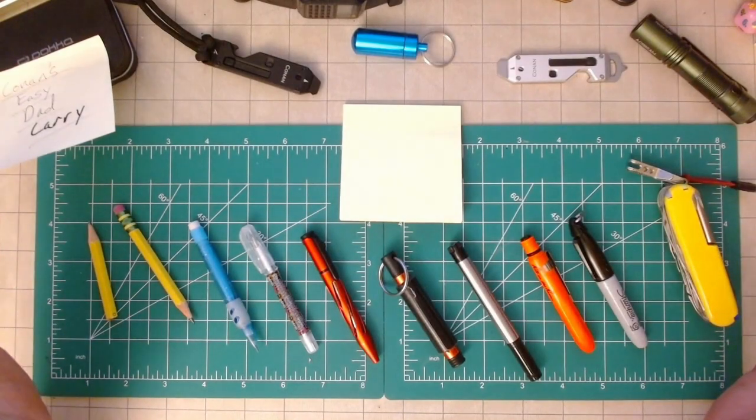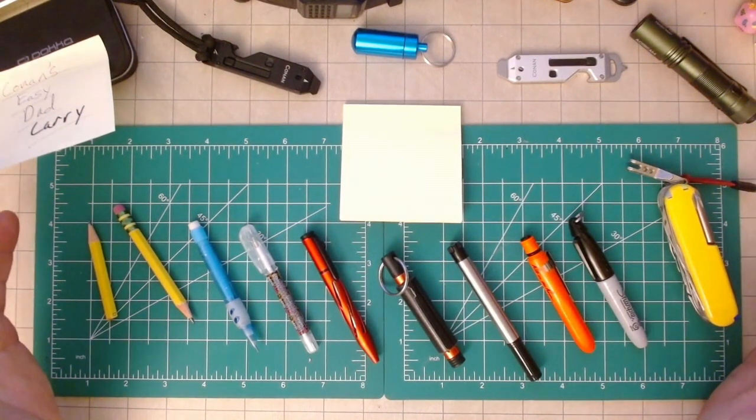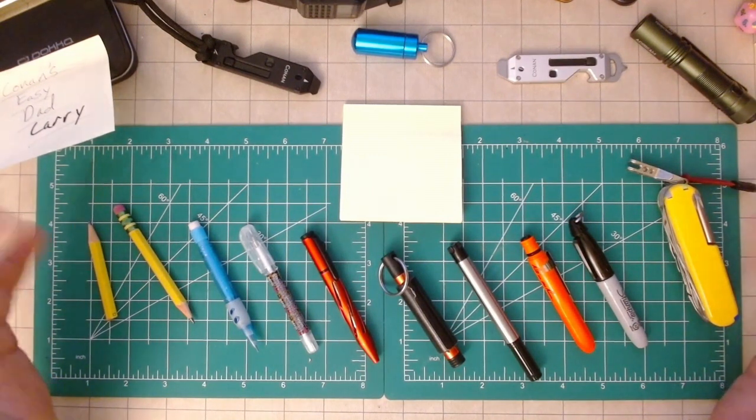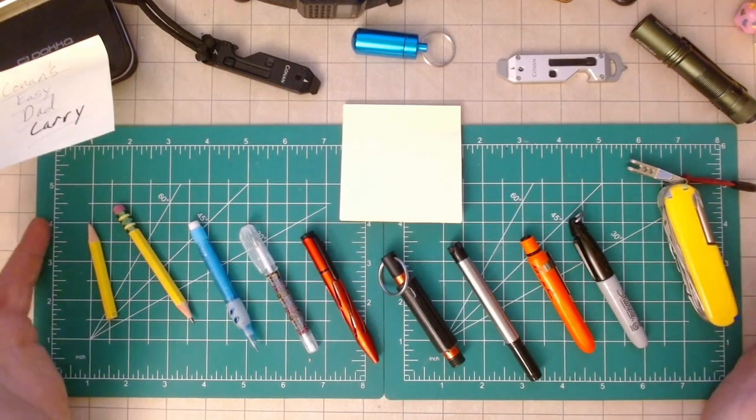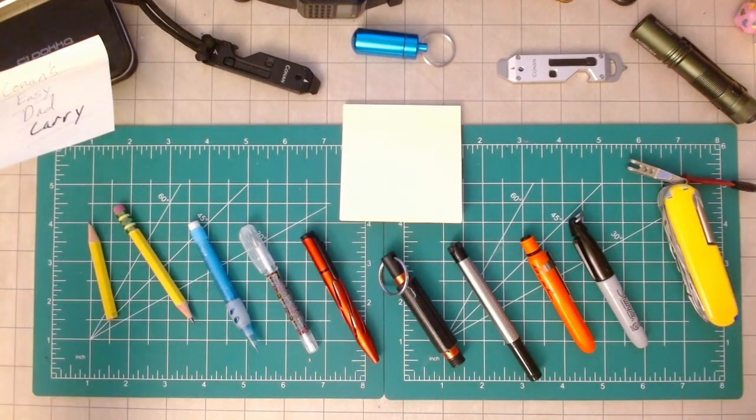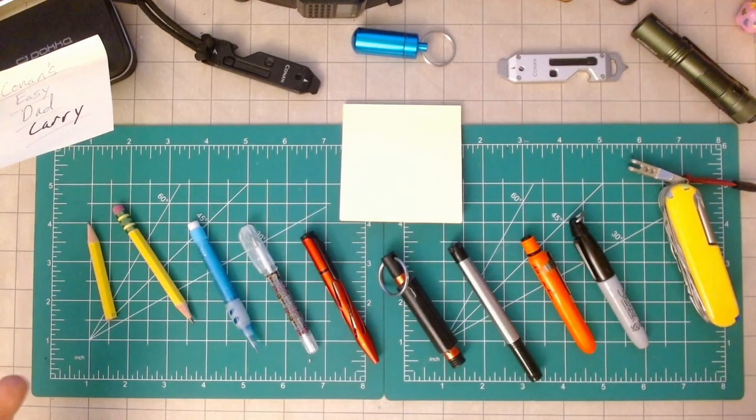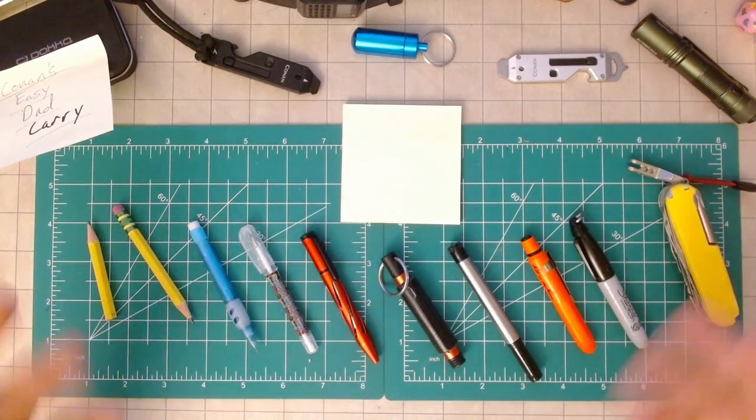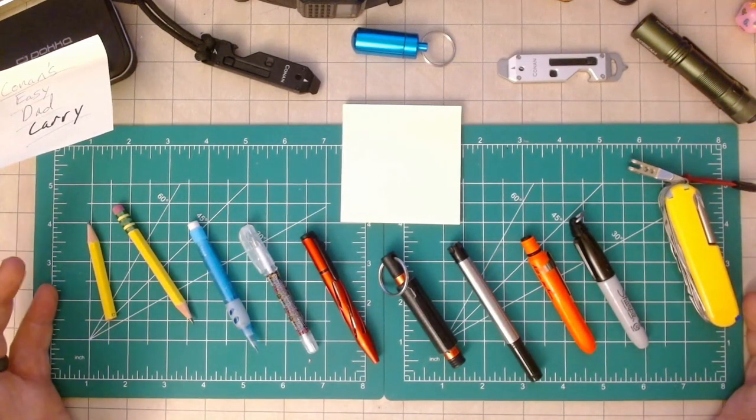All right, so a couple things before I really get into it. I want to lay out, all of these are cheap and accessible. I don't have a Fisher Space Pen because I've never bought one. I know I'm going to lose it. Most of what I've got here has really just been collected over time. Some of the stuff you've actually seen in other videos.